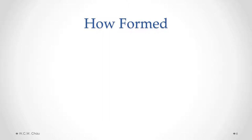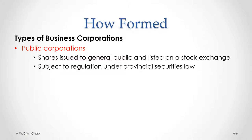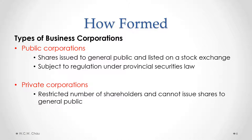There are generally two types of business corporations: public corporations and private corporations. Public corporations issue their shares to the general public, and those shares are listed on a public stock exchange like the Toronto Stock Exchange, meaning any member of the general public with a brokerage account can buy and sell those shares. Because the shares are available to the general public, public corporations are subject to an extra layer of government regulation under provincial securities law. Private corporations are essentially corporations whose shares are not listed on a public stock exchange, the number of shareholders is usually much smaller, and generally a private corporation cannot issue shares to the general public.